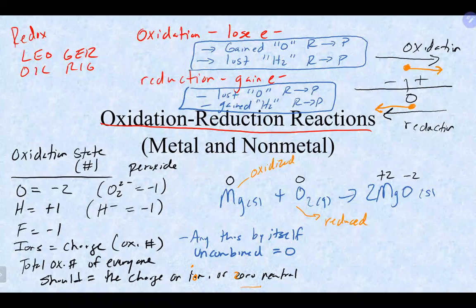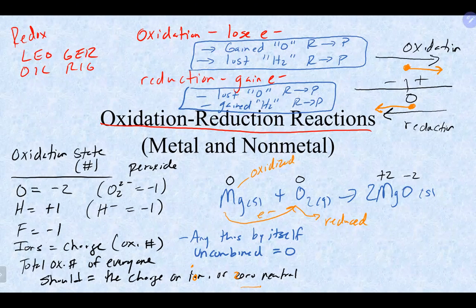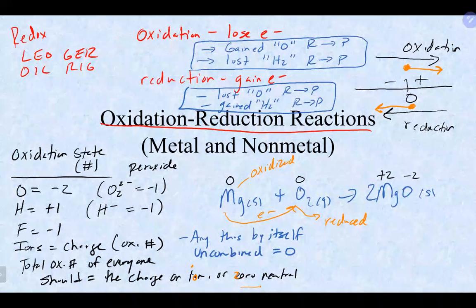What's happening is the magnesium is giving away its electrons to the oxygen. This is always what should happen in an ionic compound: metals should always lose electrons and be oxidized; non-metals should always gain electrons and be reduced. Whenever you have an ionic compound with a metal and non-metal, the metal is oxidized and the non-metal is reduced.